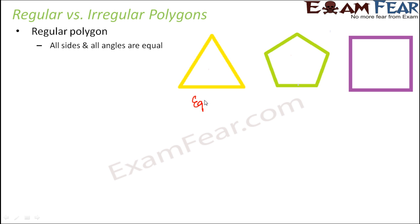So equilateral triangle is an example of a regular polygon. Why? Because in an equilateral triangle all the sides are equal. All the angles are also equal. So this is an example of regular polygon. Similarly when you look at this polygon with five sides such that the length of all the five sides are equal and also the measure of all the five angles are also equal. So this is a regular pentagon.